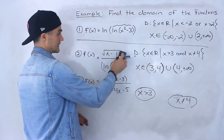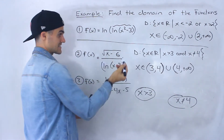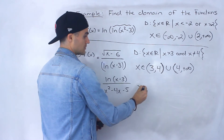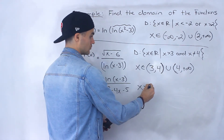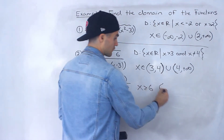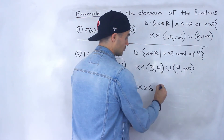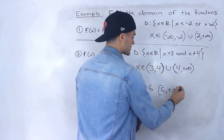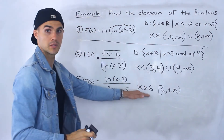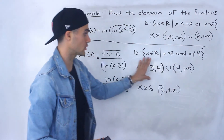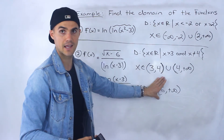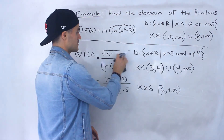But if this were instead the square root of x minus six, it would change everything, because then x would have to be greater than or equal to six. The domain would just be from six to positive infinity, inclusive of six. We wouldn't have to worry about the break at four or the restriction at three, because that would be the more restrictive condition and the others would be contained within it.